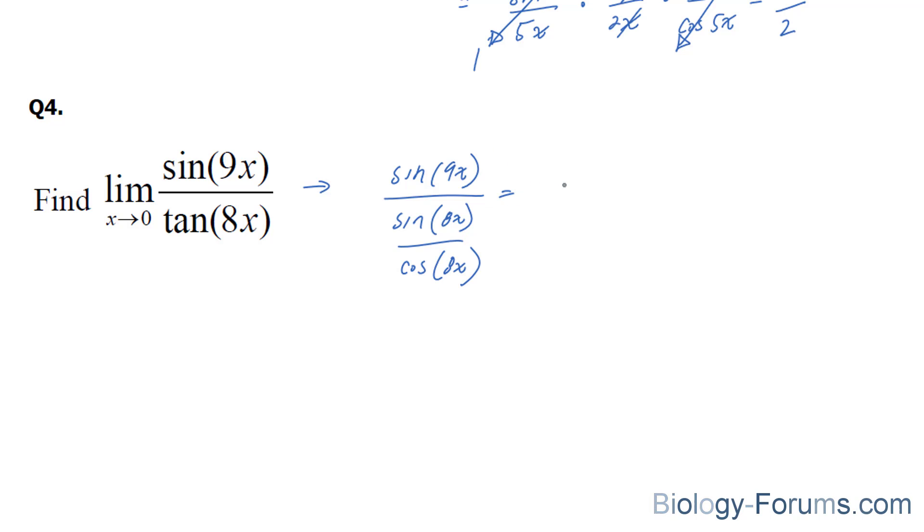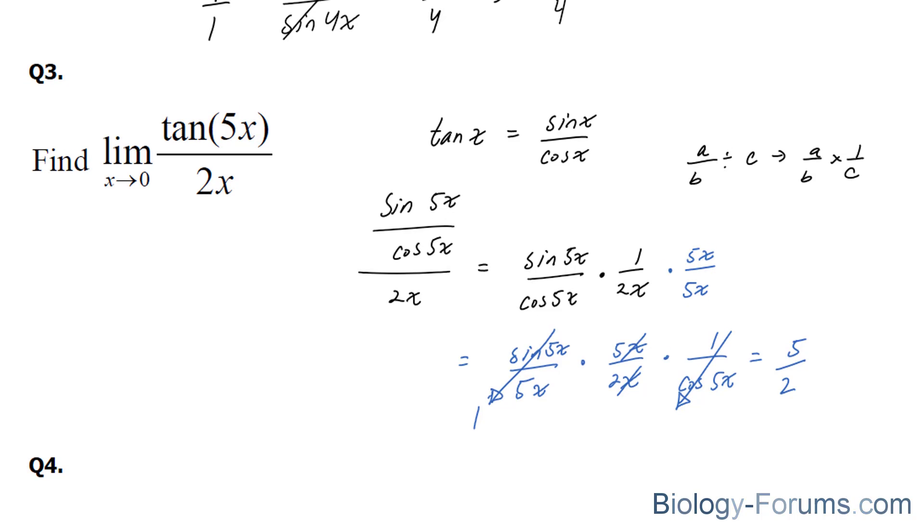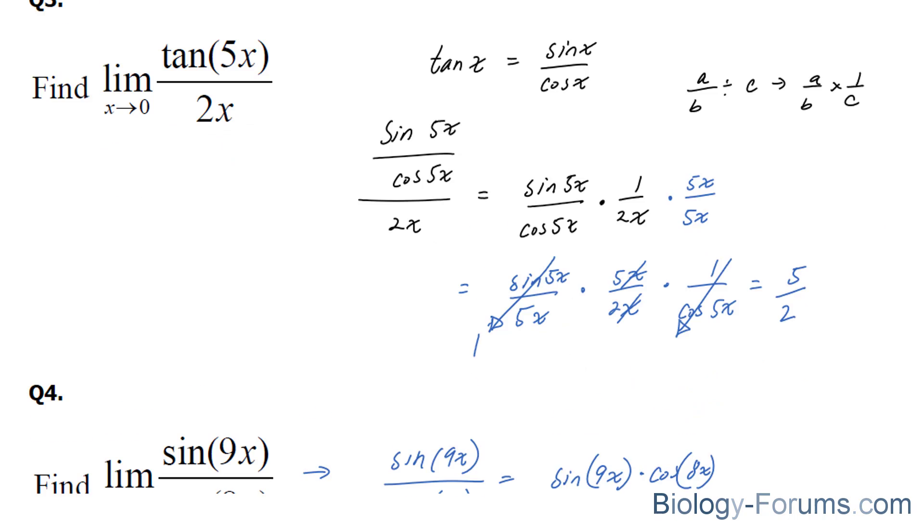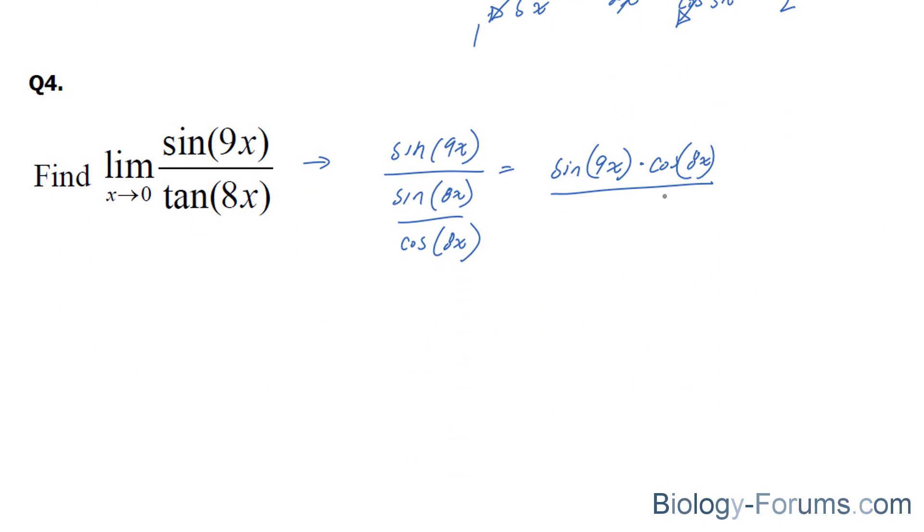I'm going to shuffle this around and make it look nice: sine 9x times cosine 8x divided by sine 8x. And we're going to use the same logic as before.